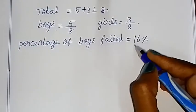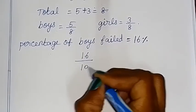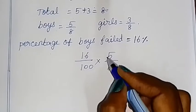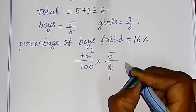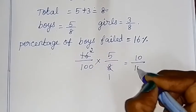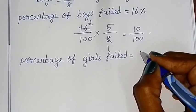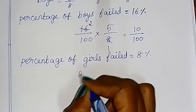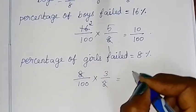Percentage of boys who failed: 16% multiplied by the fraction of boys, which is 5 by 8, giving 16 by 100 into 5 by 8 = 10 by 100. Percentage of girls who failed: 8% multiplied by 3 by 8 = 8 by 100 into 3 by 8 = 3 by 100.